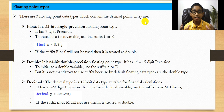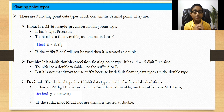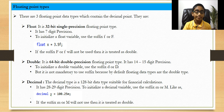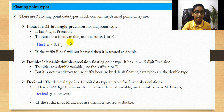Next we're going to talk about floating point types. There are three types: float, double, and decimal. Float is a 32-bit single-precision floating point type with seven digit precision. To initialize a float variable, use the suffix capital F or lowercase f — for example, float x = 3.5f. If the suffix F is not used, it's treated as a double.